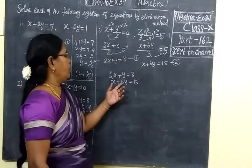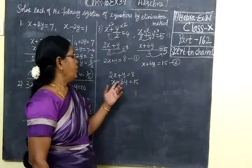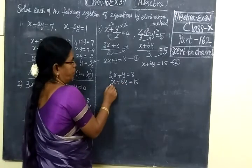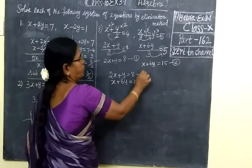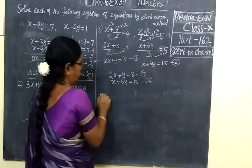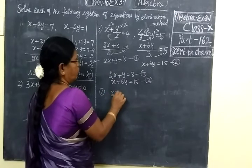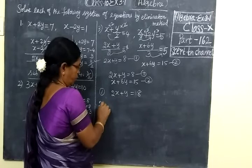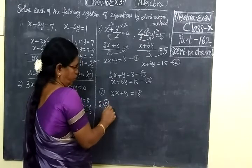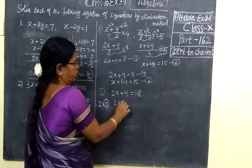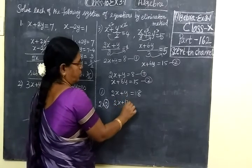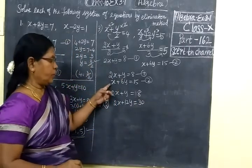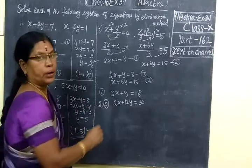Now we want to make the coefficient equal for either x or y. We multiply equation 2 by 2 to match the x coefficient. Equation 1 stays as it is: 2x plus y equal to 8. Multiply equation 2 by 2: 2x plus 12y equal to 30.